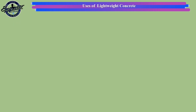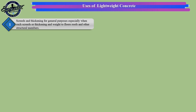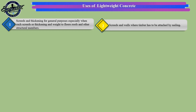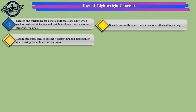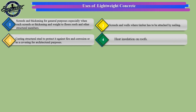Uses of lightweight concrete: 1. Screeds and thickening for general purposes, especially when such screeds or thickening add weight to floors, roofs, and other structural members. 2. Screeds and walls where timber has to be attached by nailing. 3. Casting structural steel to protect it against fire and corrosion, or as a covering for architectural purposes. 4. Heat insulation on roofs.